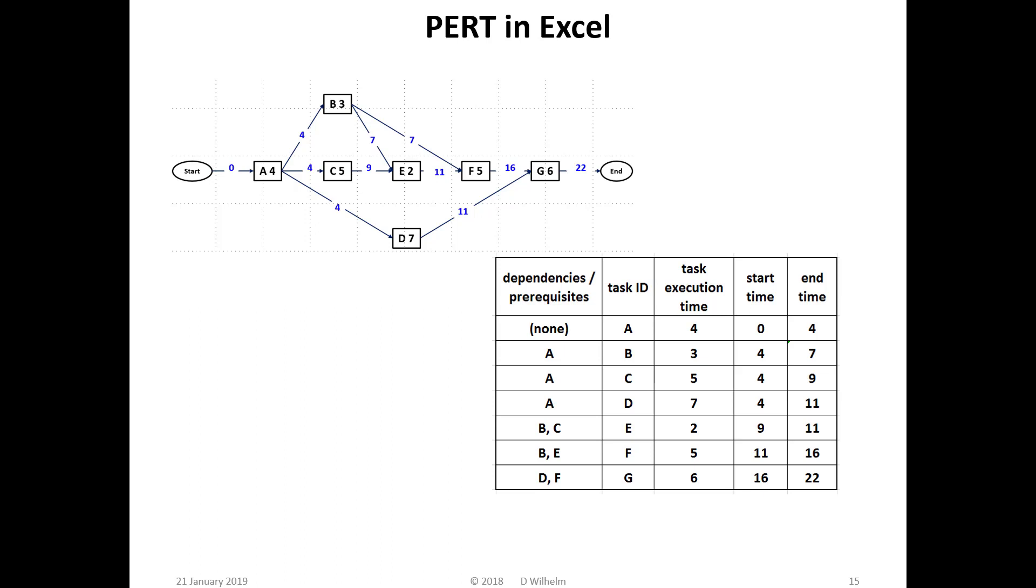For a task with a single prerequisite task, the start time equals the end time of that prerequisite task. For a task with multiple prerequisites, the start time equals the maximum of the prerequisite end times. So long as the topology of the project does not change, the Excel PERT version calculates accurate task start and stop times and the project cumulative elapsed time. To use the Excel PERT to determine the critical path requires manual intervention and must be redone each time a task execution time is changed.